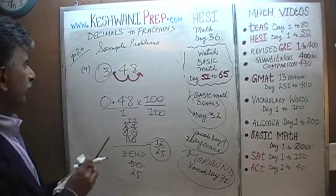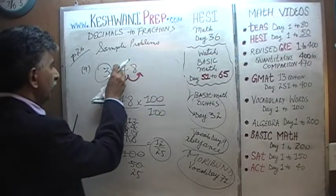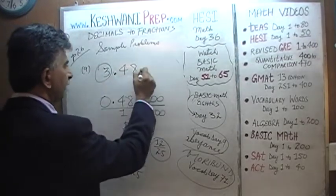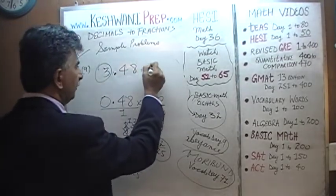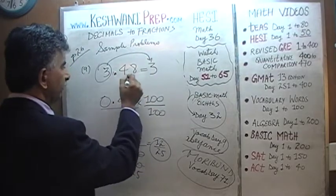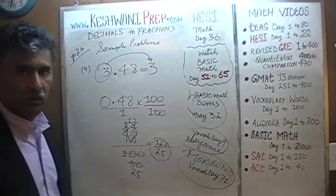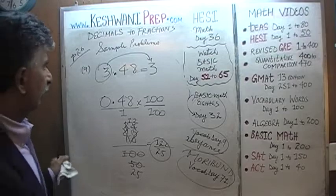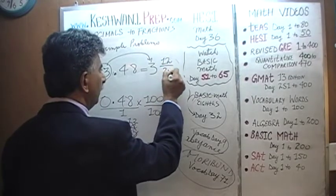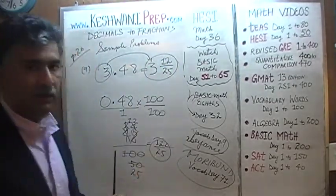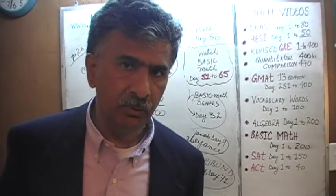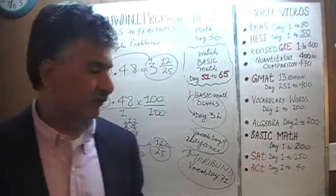So we're done. It was 3.48, which turns out to be equal to 3 — the whole number — and 0.48 which we just found out is 12 over 25. So the answer is 3 and 12/25.